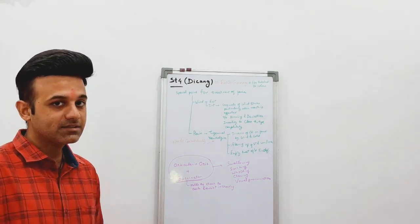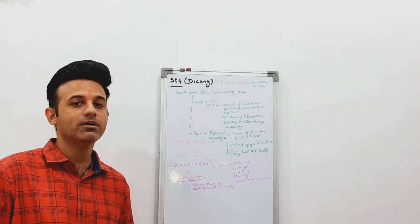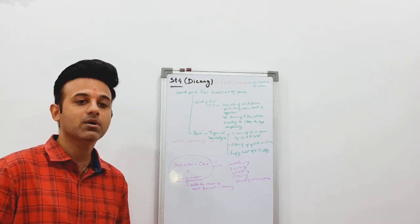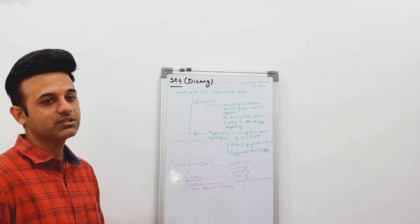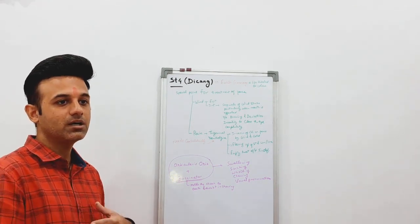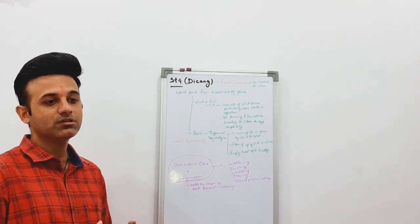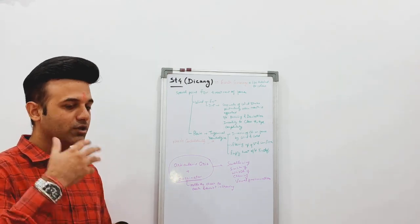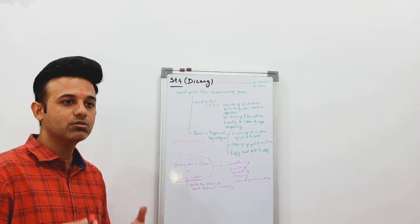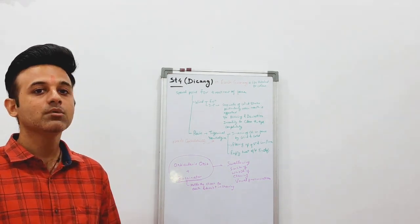Due to its location, Stomach 4 is a very important point for the treatment of the face. It can be used in conditions of wind — due to internal or external reasons — which causes drooling of saliva, deviation of mouth, or inability to open the eyes. This point has a significant role to play.